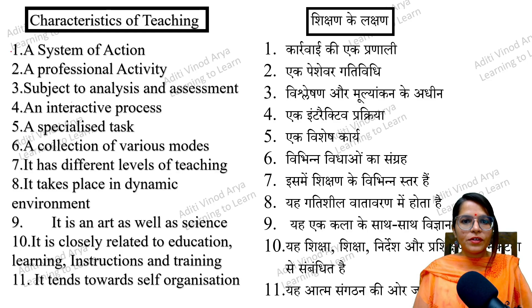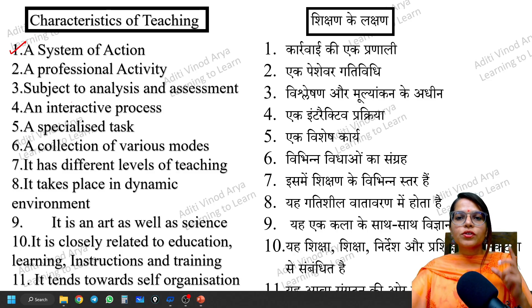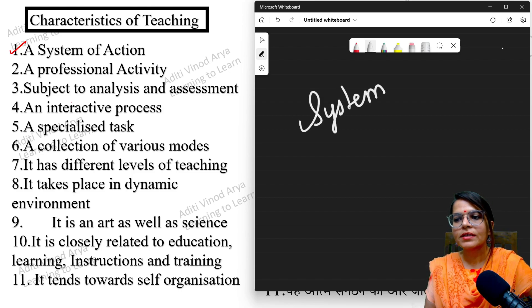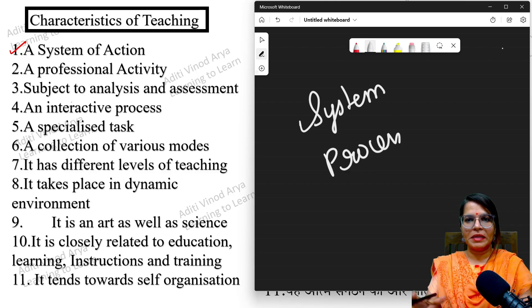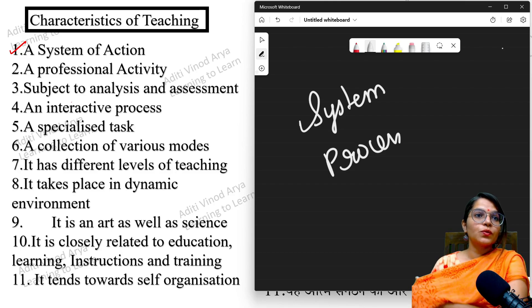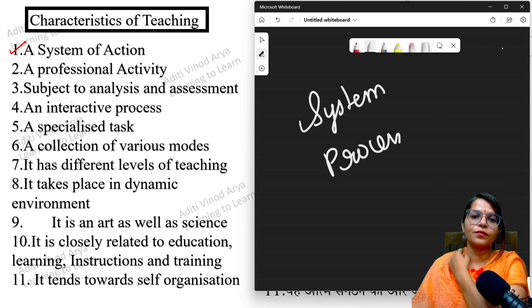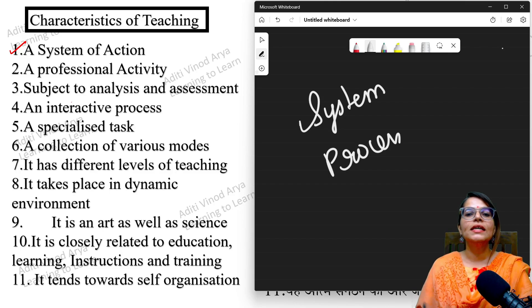The first characteristic of teaching is that it is a system of action. Action here means process. System means process — it is a systematic process, which means it is a step-by-step process. You have to complete the first step and then go to the second step. So the first characteristic of teaching is that it is a systematic process.